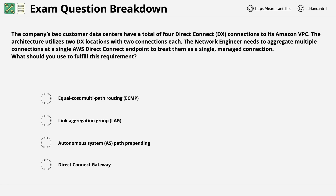Link aggregation is the combining of multiple network connections in parallel. It can be used for various things such as increasing throughput or providing redundancy. A link aggregation group is the combination of multiple physical ports.